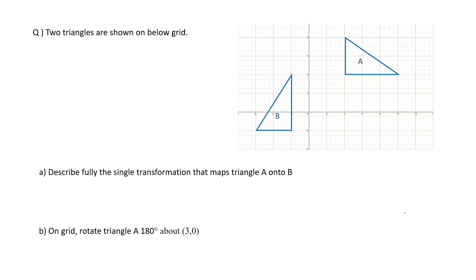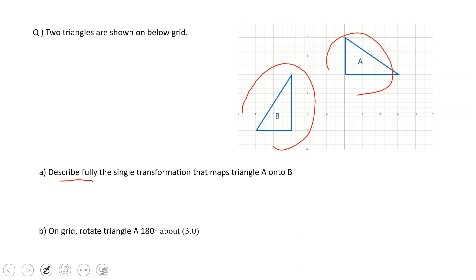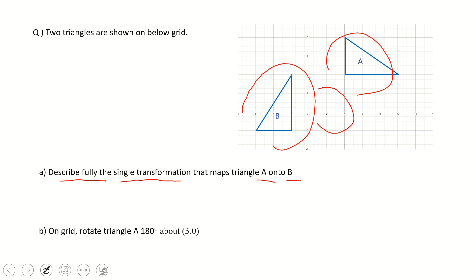Now let's move to the first question. We have two triangles on a grid, and we need to describe fully the single transformation — rotation — that maps triangle A onto triangle B. To describe the rotation, we first need to find the center of rotation. The center should be somewhere between the two shapes, and to find it we will use a ruler and compass.